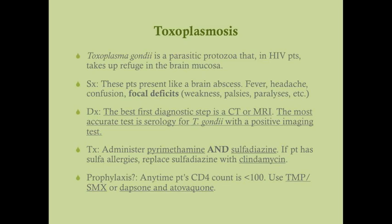Imaging will show ring-enhancing circular lesions characteristic of toxoplasmosis. While imaging doesn't identify the organism, the combination of low CD4 count, HIV status, symptoms, and ring-enhancing lesions is sufficient for clinical diagnosis. The most accurate test is serology for Toxoplasma gondii combined with a positive imaging test, as you are testing for the actual remnants of the organism.